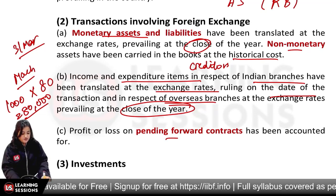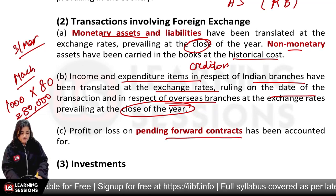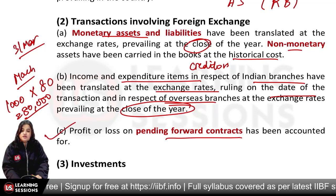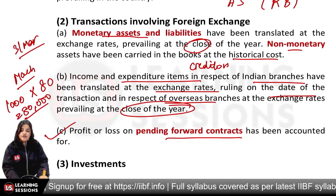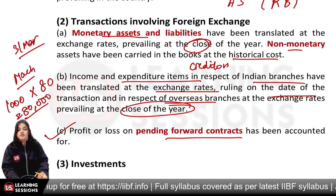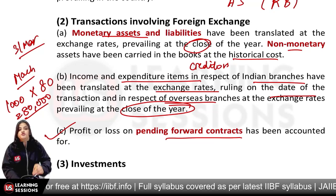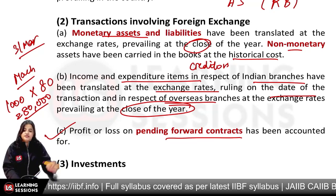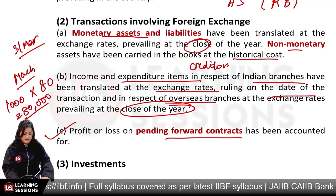Then, pending forward contracts — the profit and loss on them will be shown at year end, so we will know that in the future we will have to give or receive money.